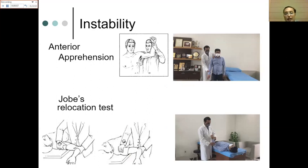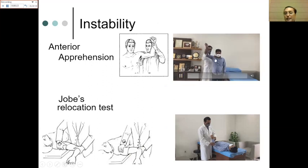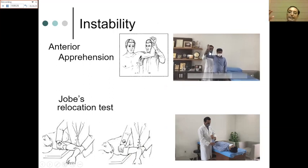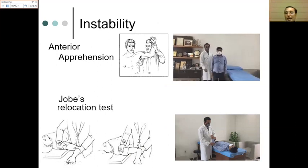For instability, confirm the type — approximately 90 percent of instability is anterior. The apprehension test can be done standing or lying. In standing, the examiner stands behind the patient, abducts the arm beyond 90 degrees, flexes the elbow to 90 degrees, and applies external rotation force. If the patient winces or resists, it is positive — indicating forward translation of the humeral head toward the Bankart lesion. This may occasionally cause dislocation in the clinic.